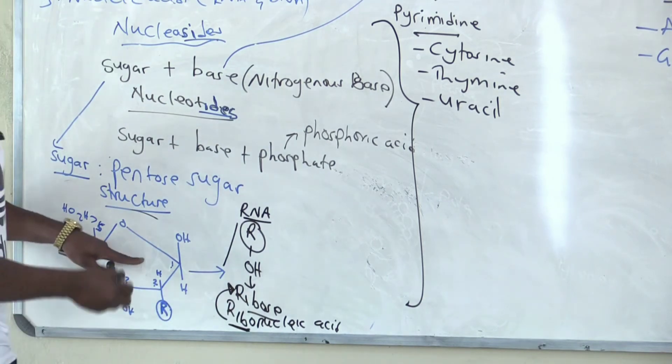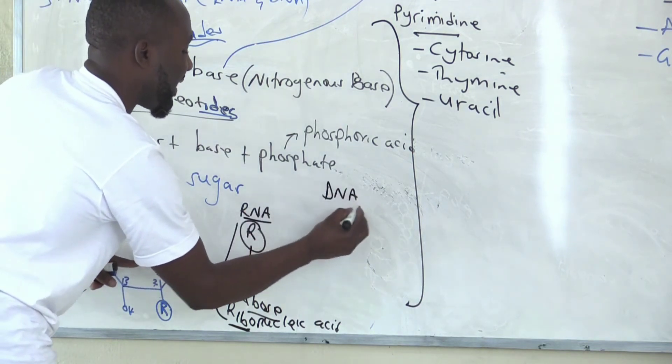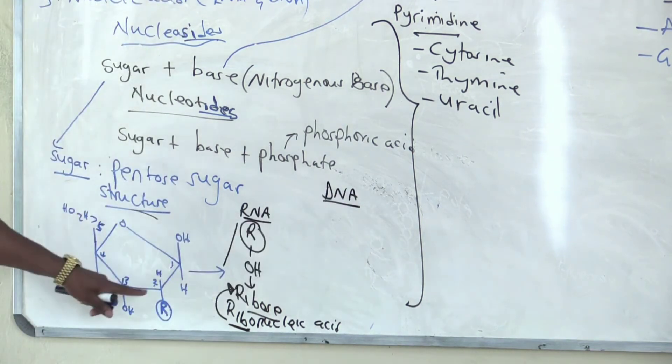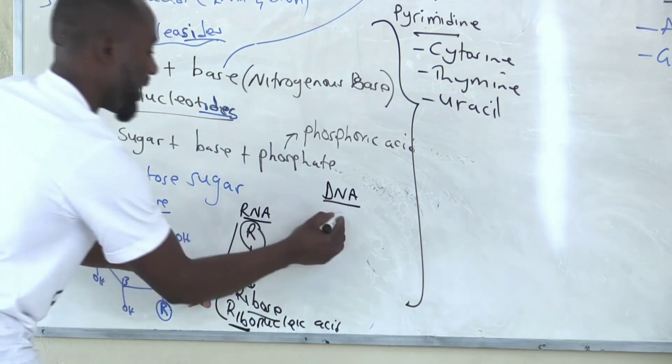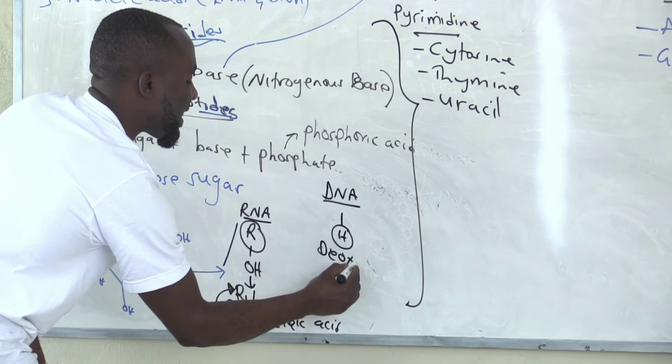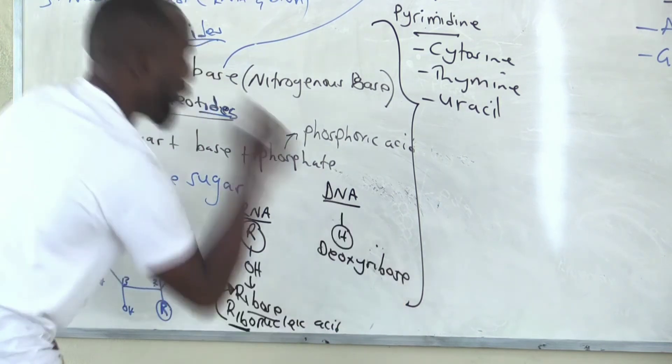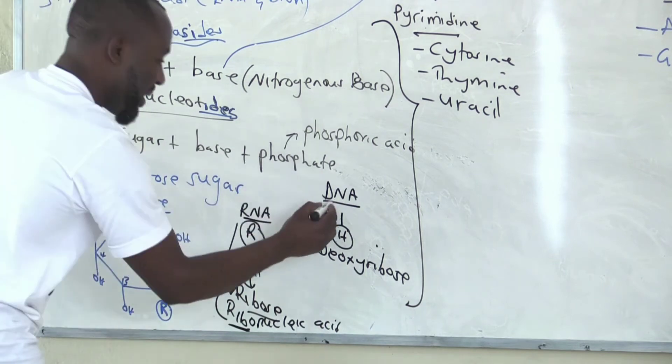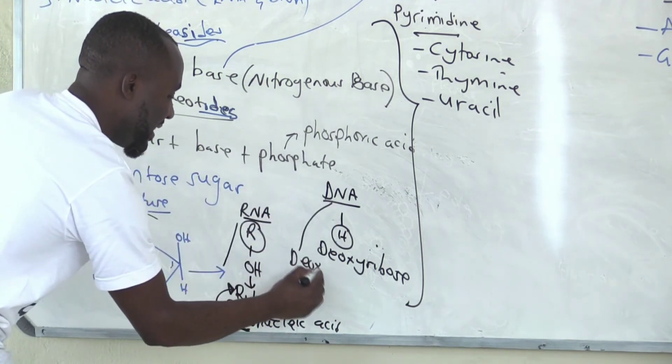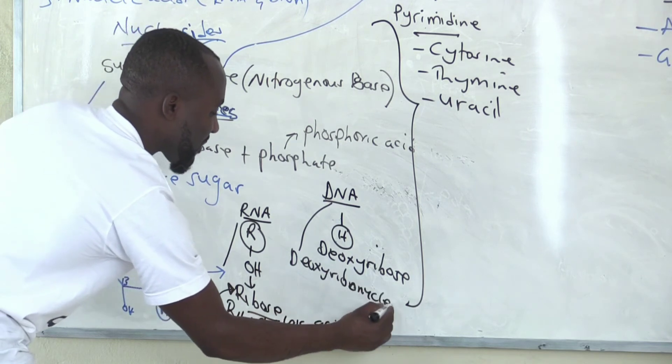If you want to use this sugar for the purpose of making DNA, then on R, carbon number two, you don't put OH, you remove oxygen from OH so that it becomes H. You have deoxed, so the sugar is now deoxyribose sugar. That's why the complete name for DNA is deoxyribonucleic acid.